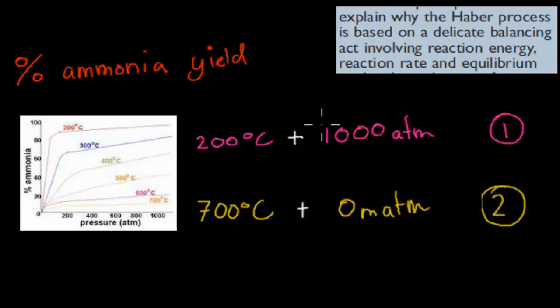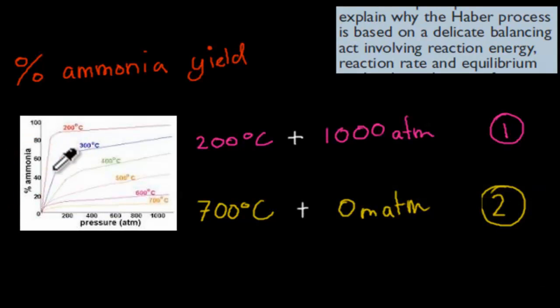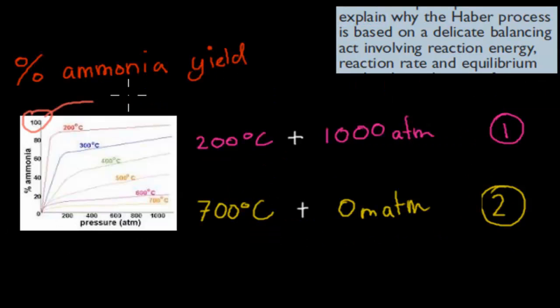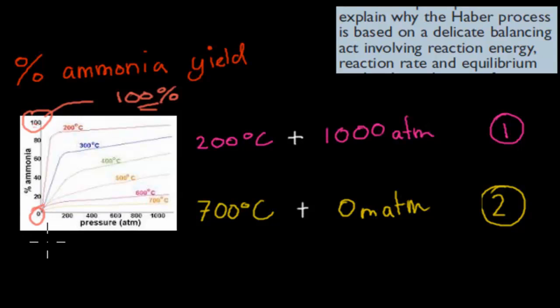Looking at this graph, on one axis we have percentage ammonia yield. At 100%, all reactants are converted into ammonia — a complete forward reaction. At 0%, essentially all of it remains as reactants and none of it is ammonia. So we want to be at 100% yield.